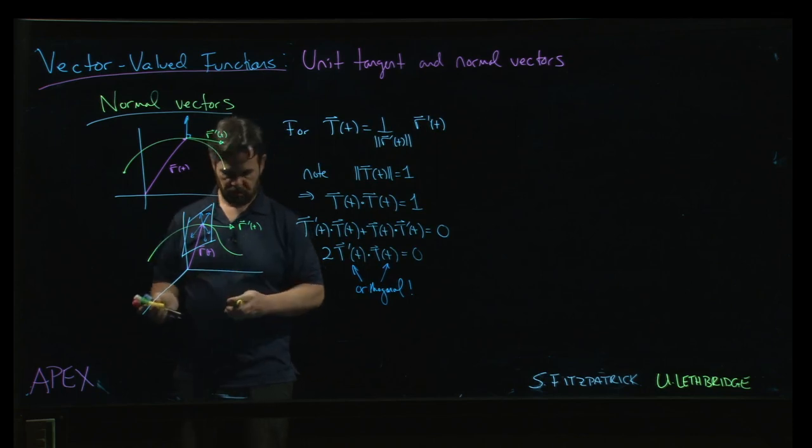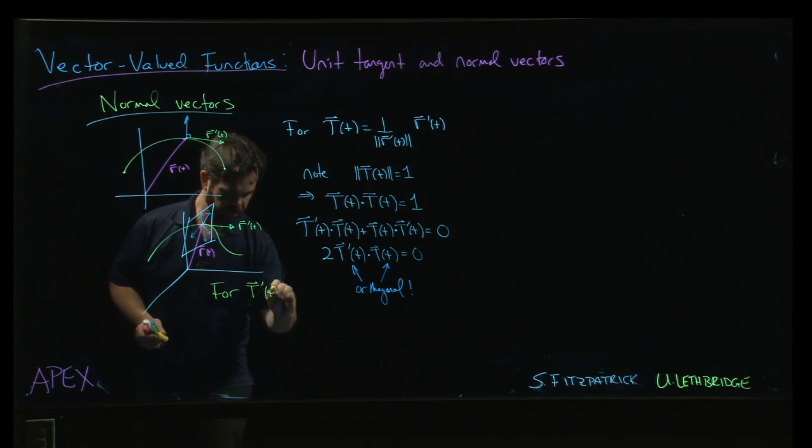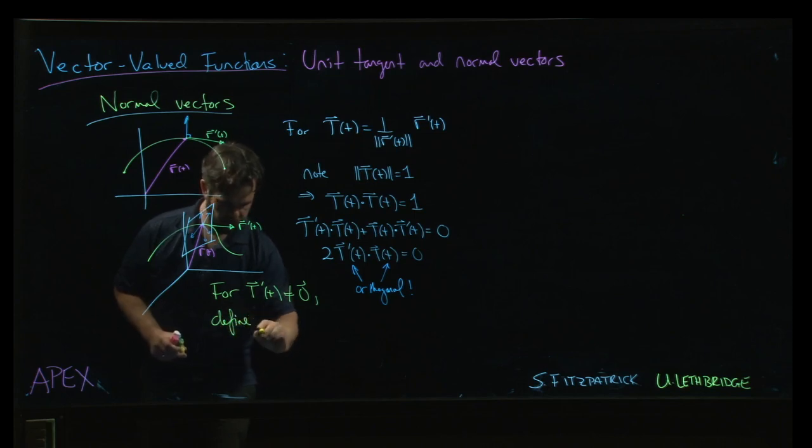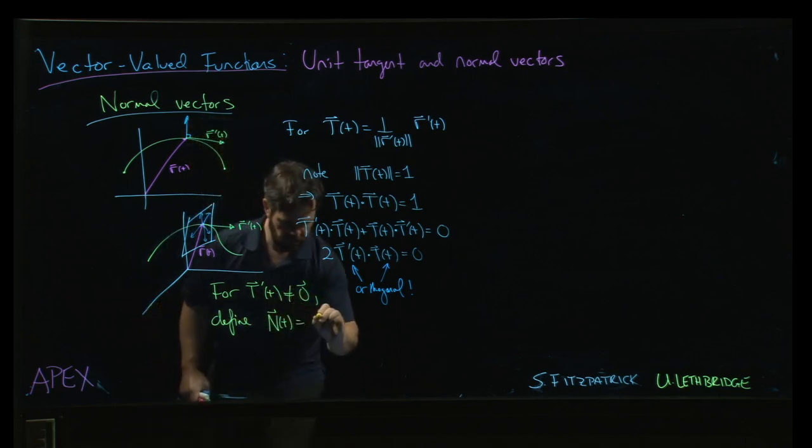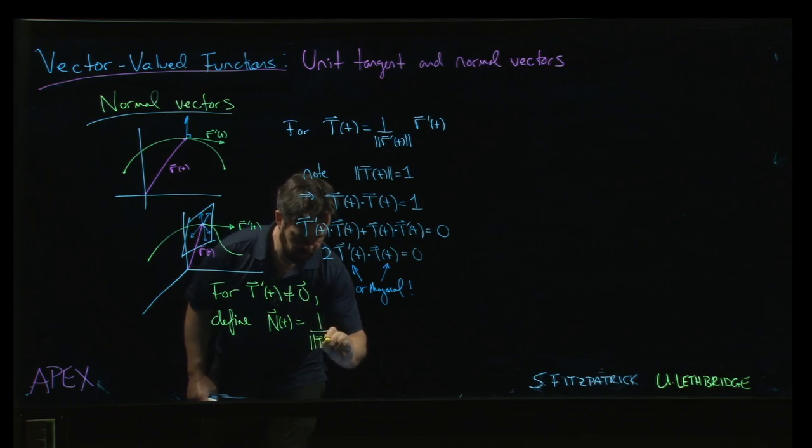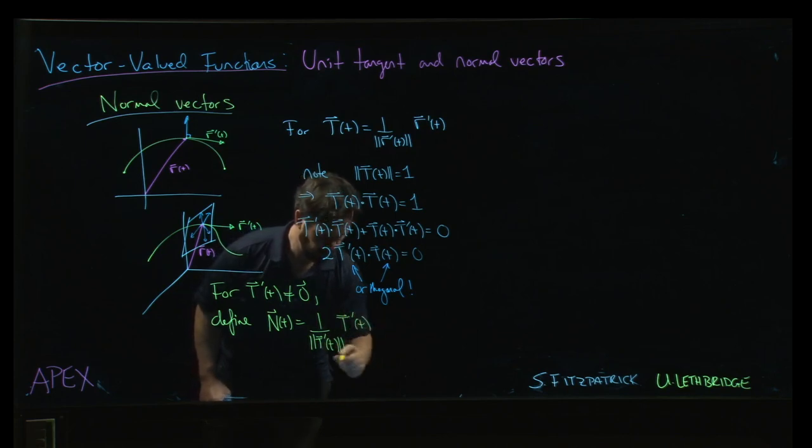But as long as this t prime is non-zero, so as long as this t prime is not equal to 0, we can define this unit normal vector n of t to be 1 over the magnitude of t prime times t prime.